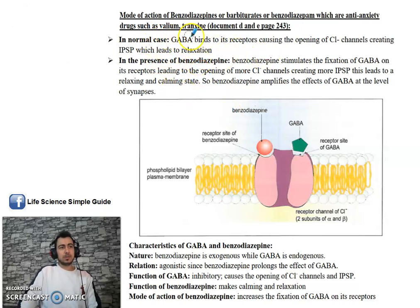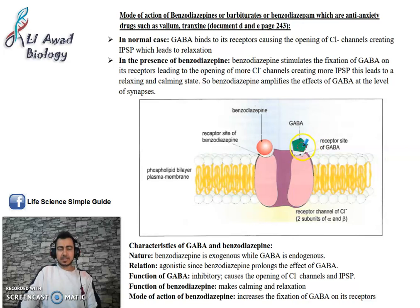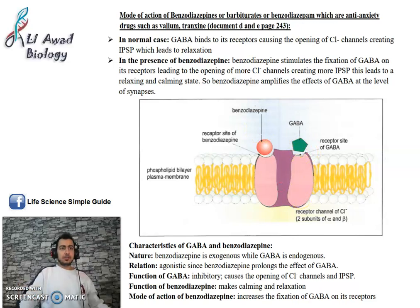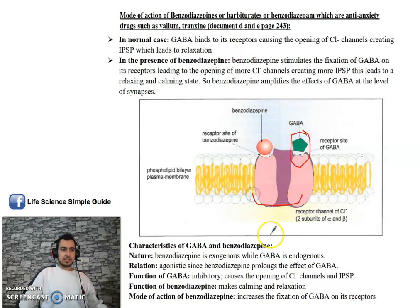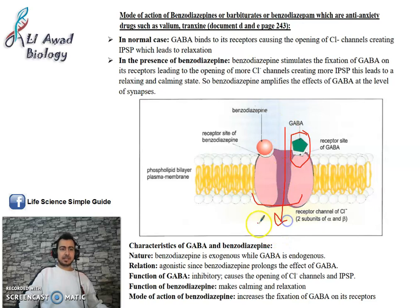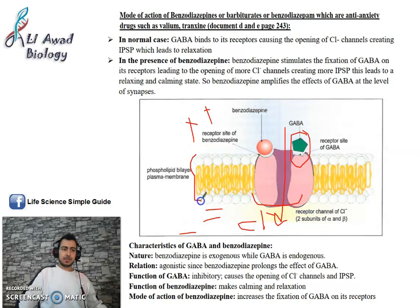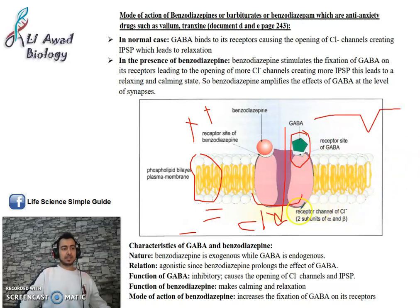GABA is a neurotransmitter. When GABA binds to its receptors, it leads to the opening of Cl⁻ channels. Cl⁻ enters from the extracellular medium to the intracellular medium, rendering the extracellular medium more positive and the intracellular medium more negative across the plasma membrane.